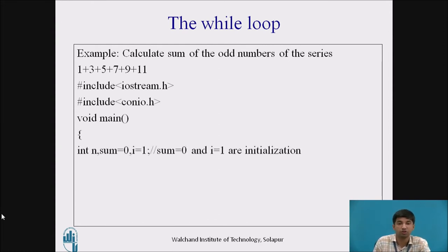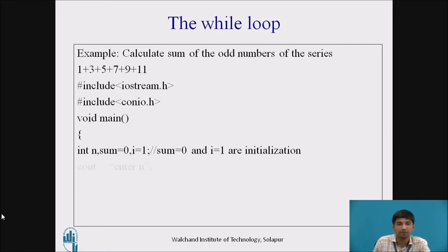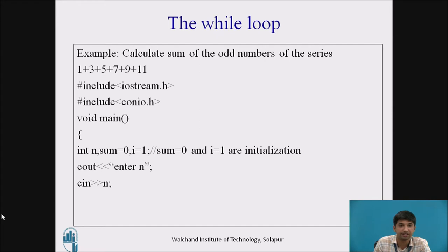iostream includes two defined objects: cout with the insertion operator (<<) and cin with the extraction operator (>>). Then void main() — void is the return type and main is the function from where the program execution starts. We declare integer n, sum equal to 0, i equal to 1. n will hold the value up to 11, sum is initialized to 0, and i is the starting value of 1. Then cout prompts to enter n, and cin takes the input value entered from the keyboard and stores it into the identifier n.